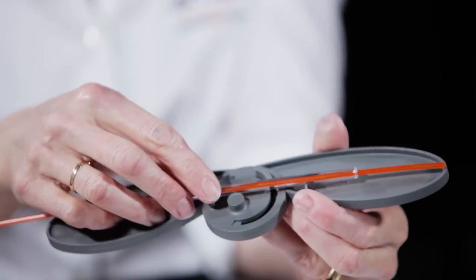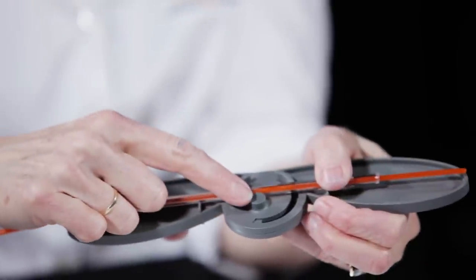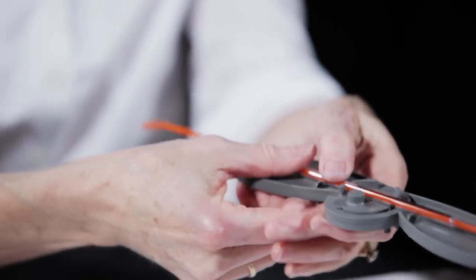To bend the OrphiTube, insert the orange nylon rod. Place in the OrphiTube bending tool aligning with the notches. The tube will bend at the level of the large circle in the middle of the tool.